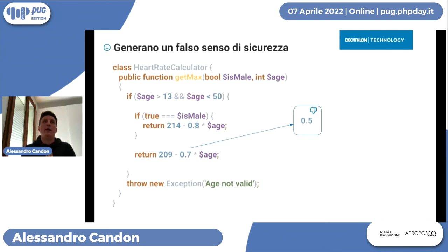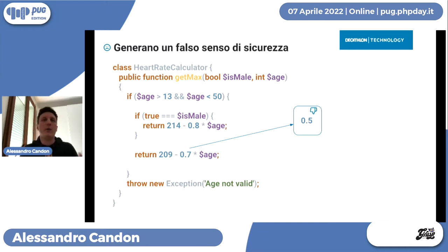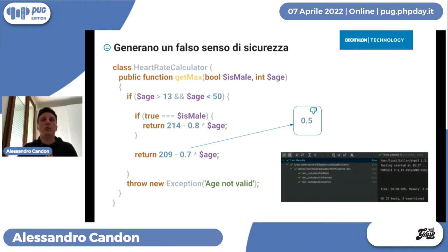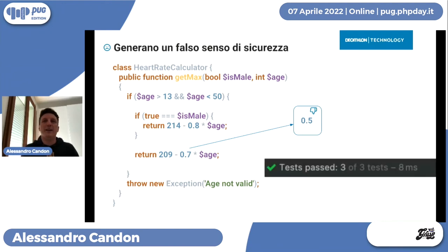L'ultimo aspetto negativo del coverage è che genera un falso senso di sicurezza. La nostra classe HeartRateCalculator ha un coverage del 100%, quindi uno sviluppatore si aspetta che sia ben testata. Ma se cambio il valore 0.7 con 0.5, i miei test dovrebbero fallire. In realtà i test passano tutti, sono tutti in verde. Questo ci mette in dubbio sulla qualità dei test nonostante il 100% di coverage.